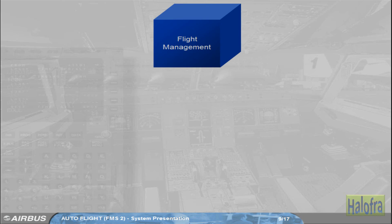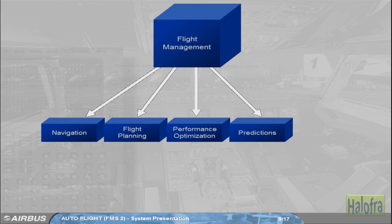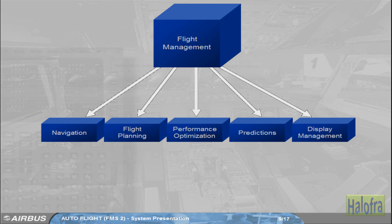The flight management part of the FMGS controls the following functions: navigation — the position of the aircraft and the estimated accuracy of this position; flight planning — the flight plan computation; performance optimization — costs, speeds, and altitude optimization; predictions — accurate estimates for waypoints, altitudes, speeds, fuel, destinations, and alternates; and display management — the control of information to the EFIS system to display autoflight modes and navigation information.